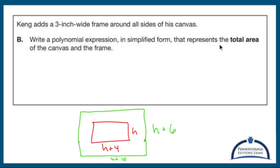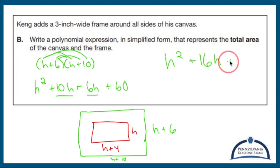Write a polynomial expression in simplified form that represents the total area of the canvas and the frame. So that's going to be this whole thing, h plus 6 times h plus 10. So that's going to be FOIL. First, which is h times h, h squared. Outer, which is h times 10, 10h. Inner, which is 6 times h, 6h. Last, which is 6 times 10, 60.